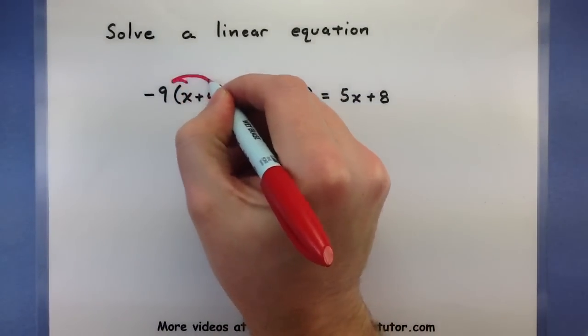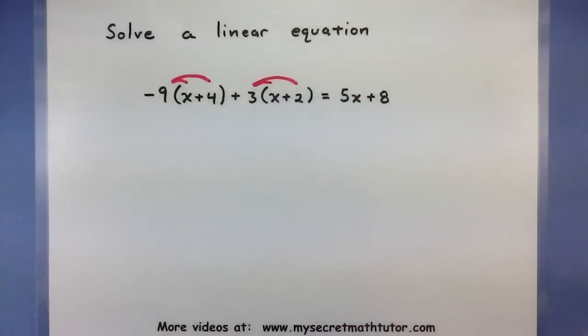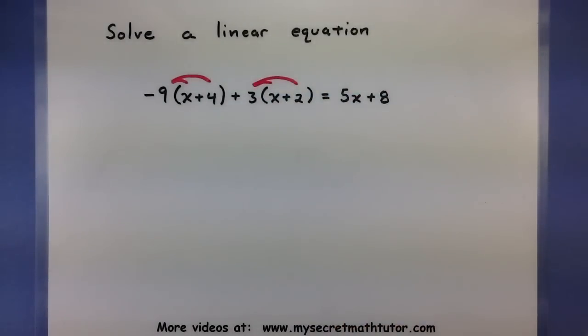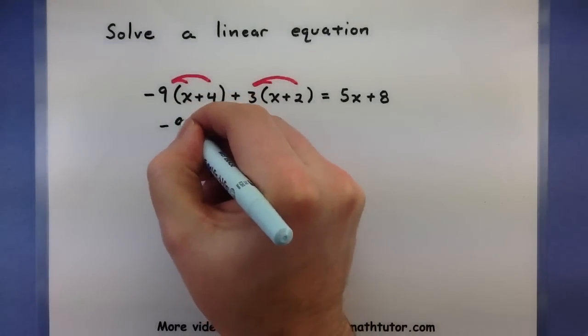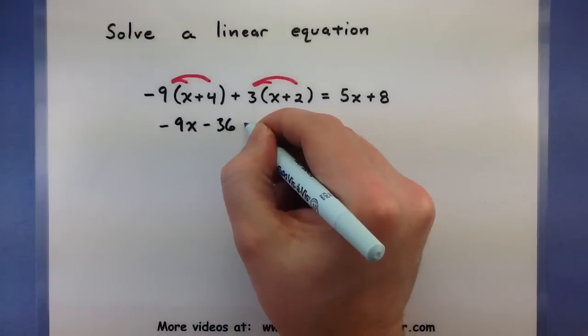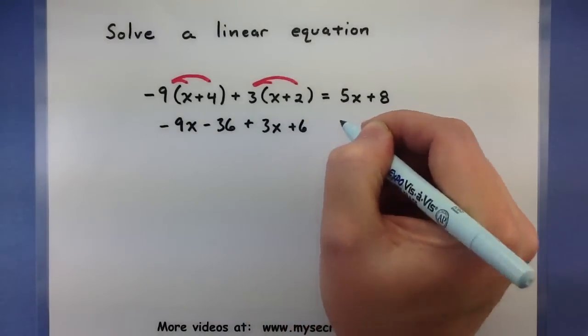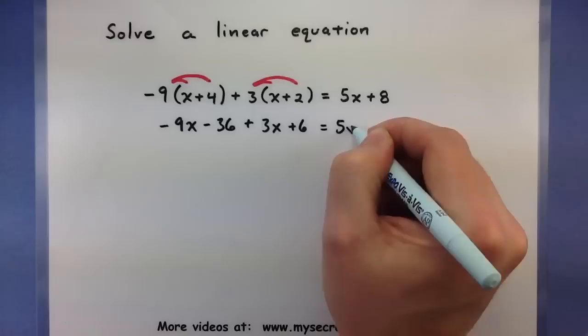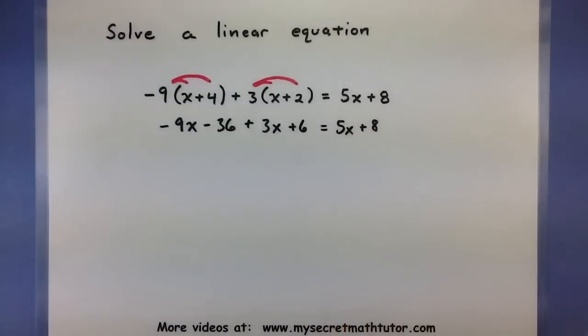One thing that can really help this is if you have these x's stuck inside parentheses, feel free to distribute so that you can work with them a little bit better. So here's negative 9x minus 36 plus 3x plus 6 equals 5x plus 8.